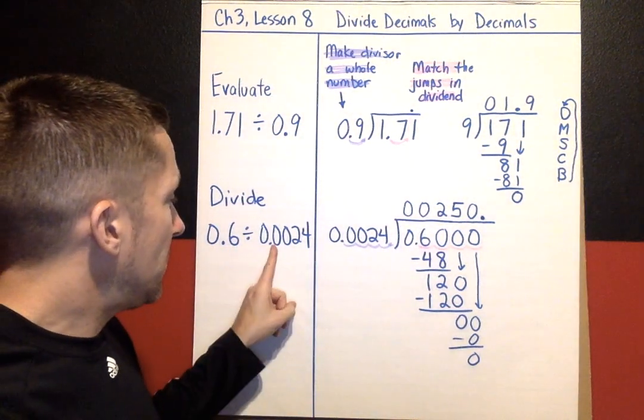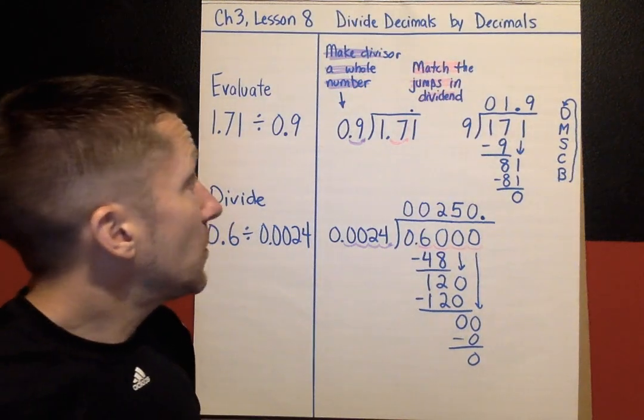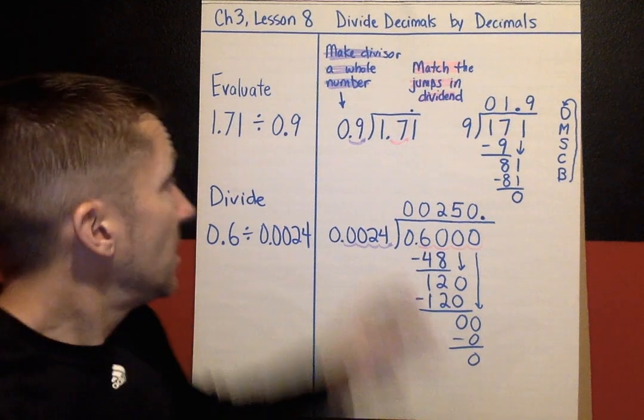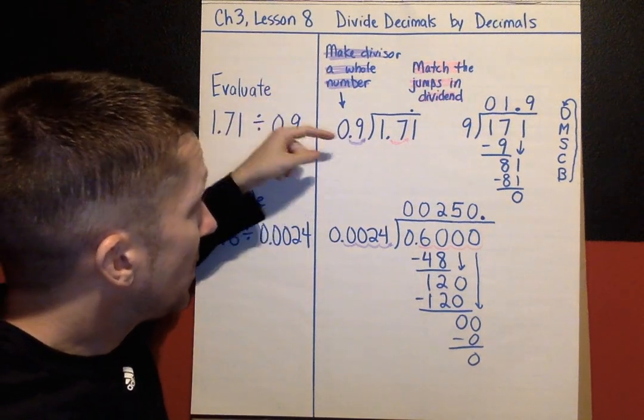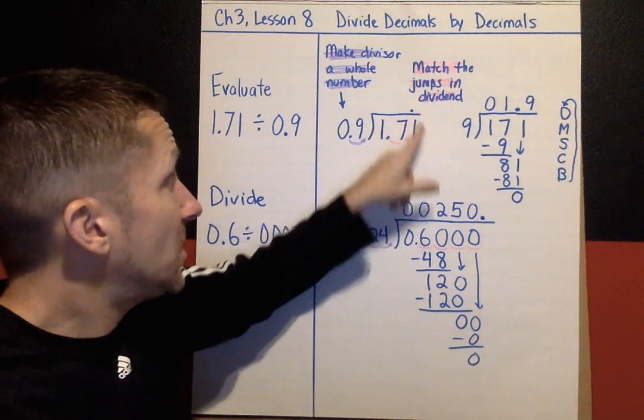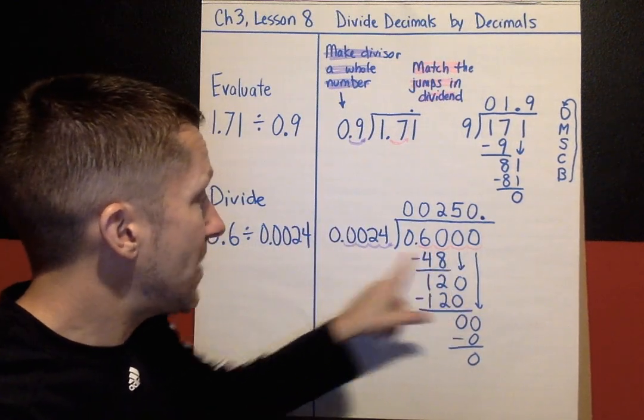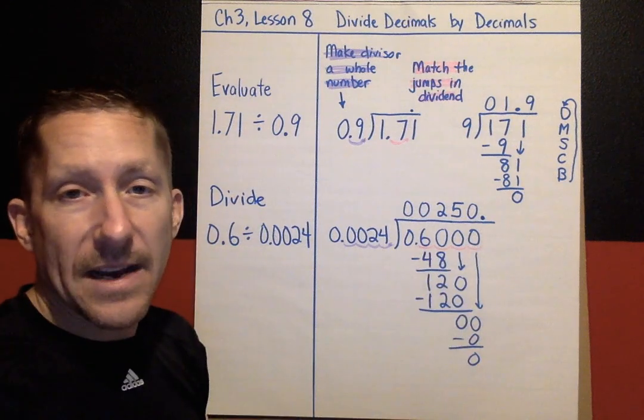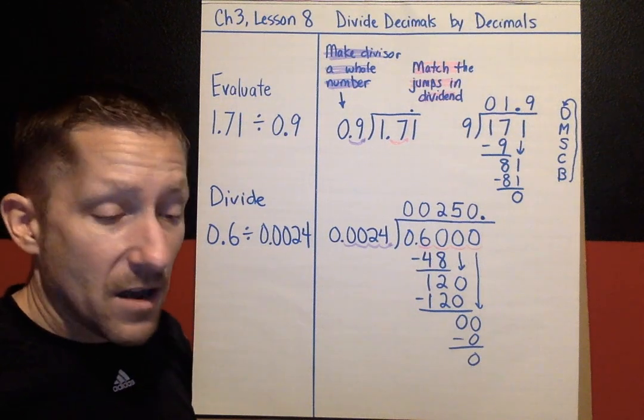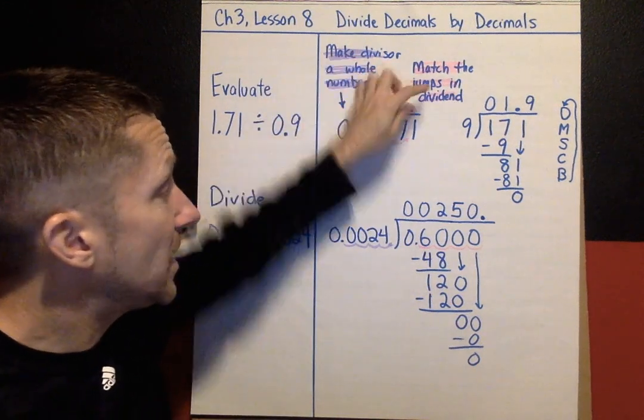That does it for divide decimals by decimals. Again, the big idea is move the decimal point first. Make the divisor a whole number, move it all the way to the right. Count however many jumps - here it took 1, here it took 4. Then you have to match the jumps in the dividend: 1 jump on the dividend matching this jump, 4 jumps on the dividend matching these 4 jumps. And then you can divide pretending there's no decimal points at all. So really it's stuff we've already done with long division we've already done. And the added thing today is getting the decimal in the right place by doing these two things right here.